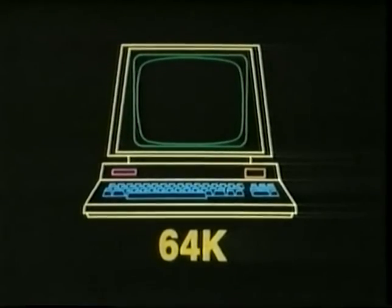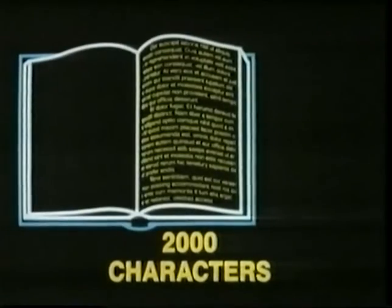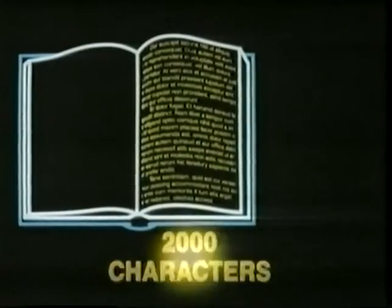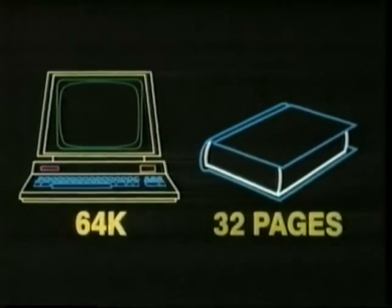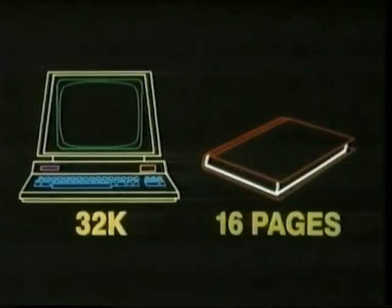This may sound a lot, but it isn't. The average page of a book contains about 2,000 characters — it's a 2K page. So even a 64K computer can only store as many characters as a 32-page book, and a 32K computer only as many as a 16-page book.